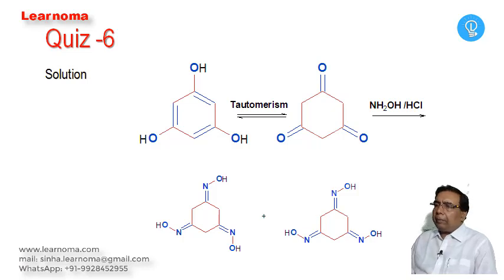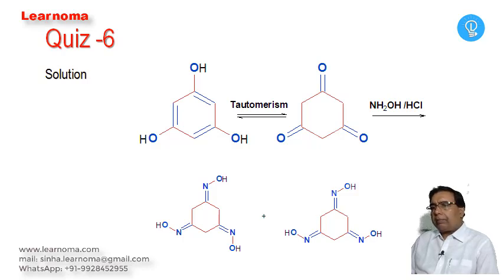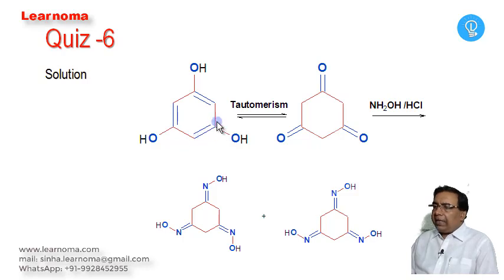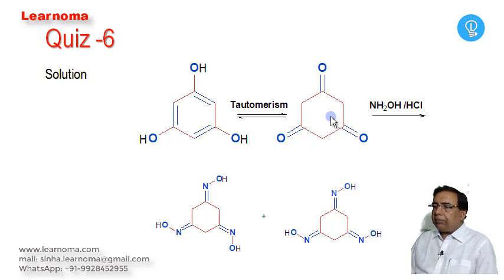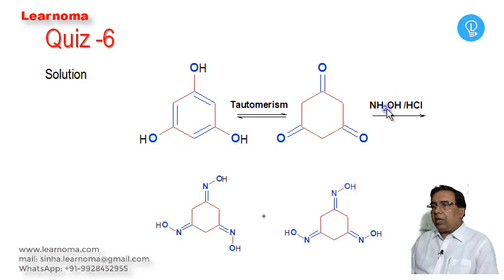Hello everyone. This question has two levels of complexity. First, phloroglucinol gets converted to cyclohexanetrione, and second, the cyclohexanetrione reacts with hydroxylamine to form the oxime. Remember how many oximes are formed.